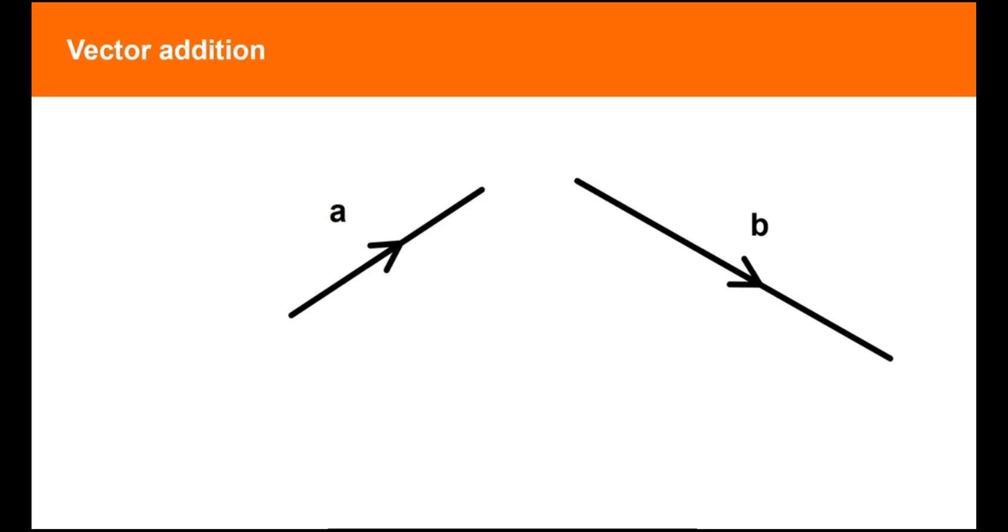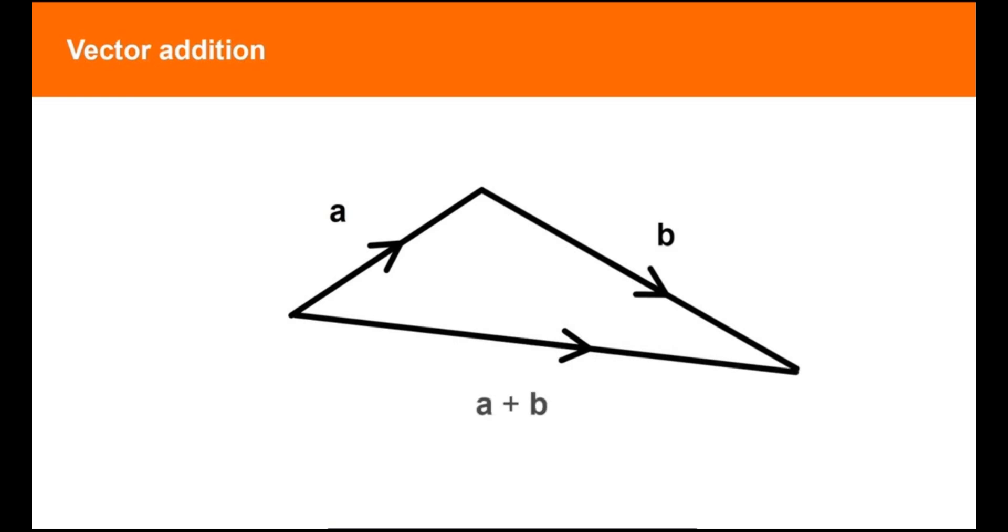Here you can see two vectors, a and b. To add vector b to vector a, you join the tail of vector b to the head of vector a. The result is a vector that joins the tail of vector a to the head of vector b. This is called the resultant vector, a plus b.